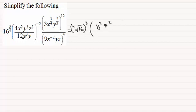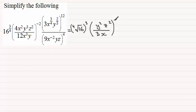I can see that 4 divides into 12 three times, so we've really got a third here — 4/12 is a third. Then for the x's, we've got x squared divided by x cubed, which leaves just x in the denominator. And all of this is to the power minus 2.